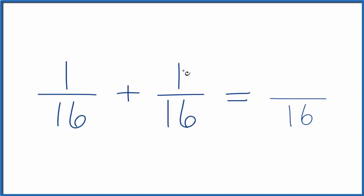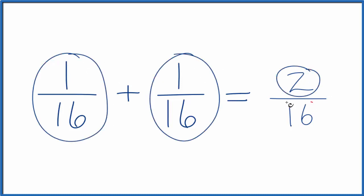For the numerator, we then just add the numerators. 1 plus 1 is 2, so we end up with 2/16, and that's not surprising. We have 1/16 here plus 1/16, we get 2/16.